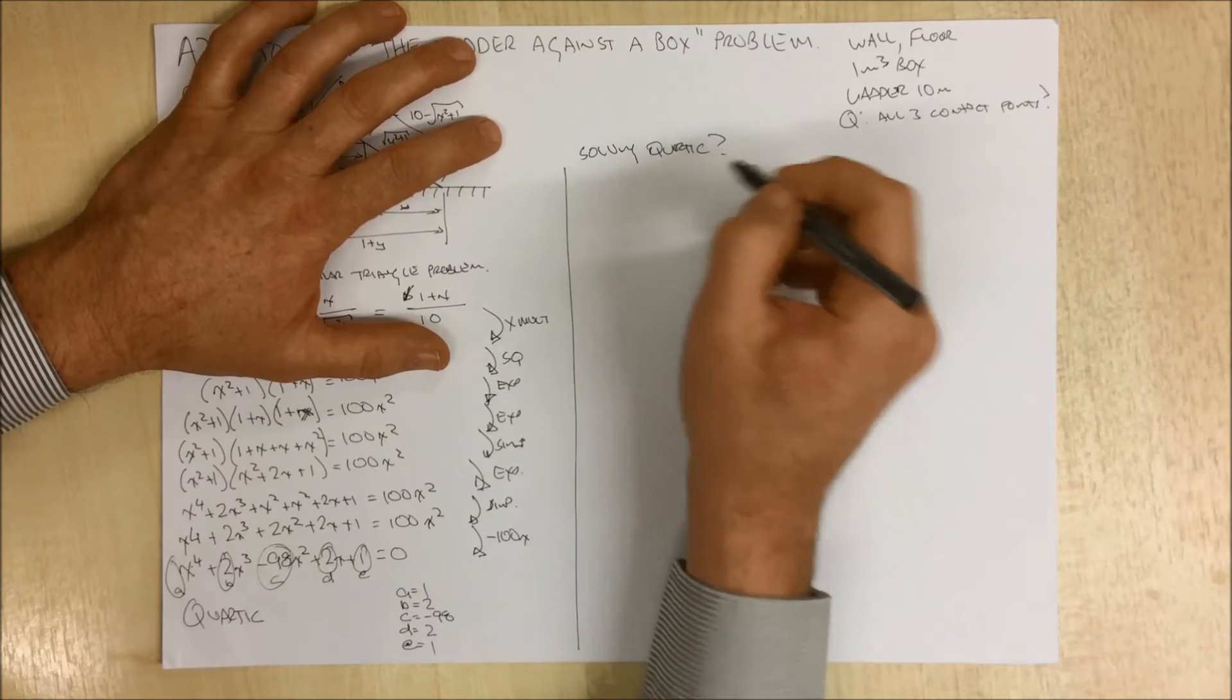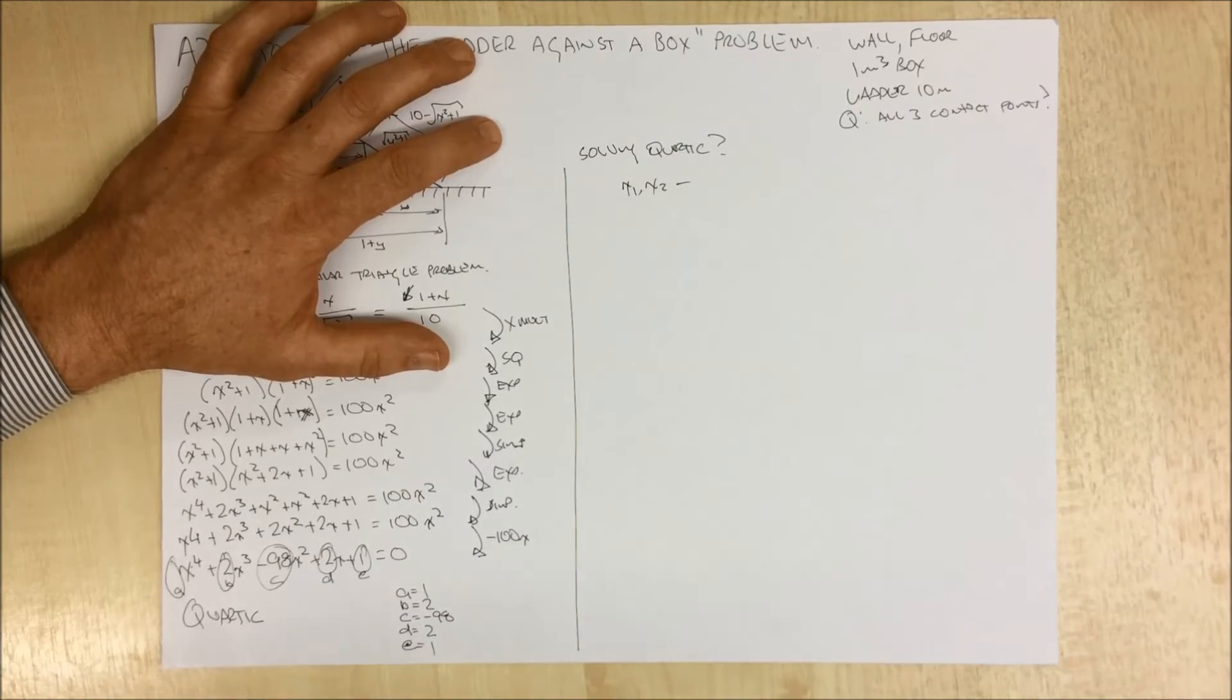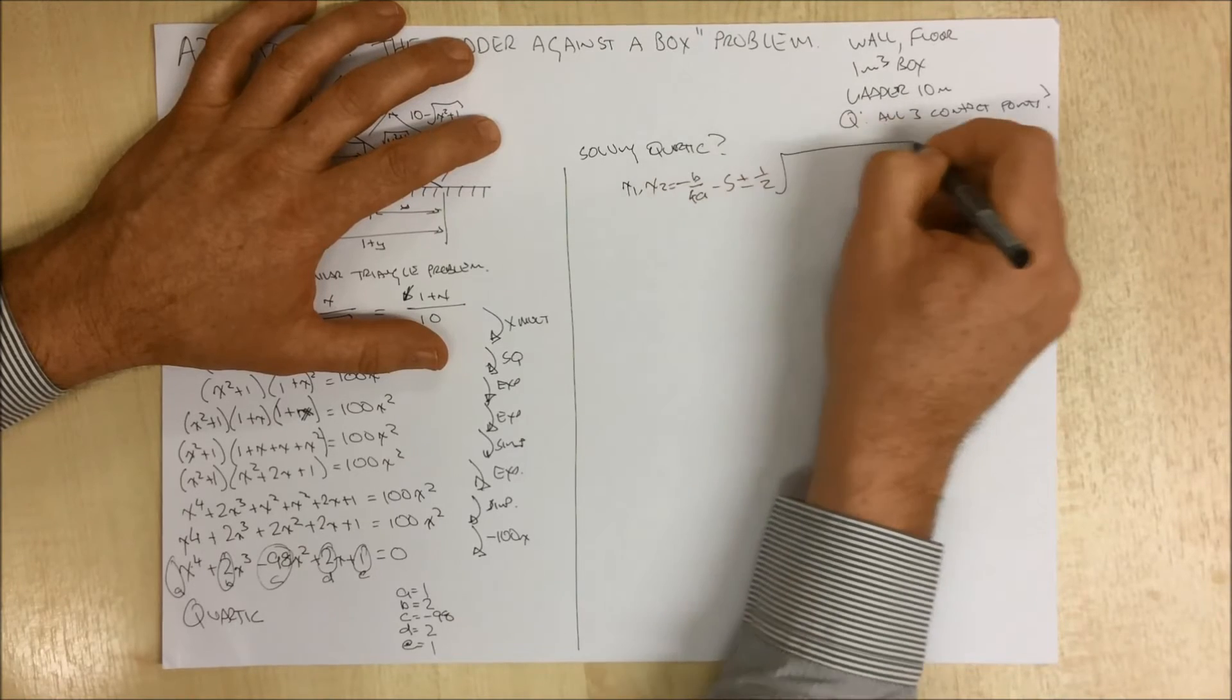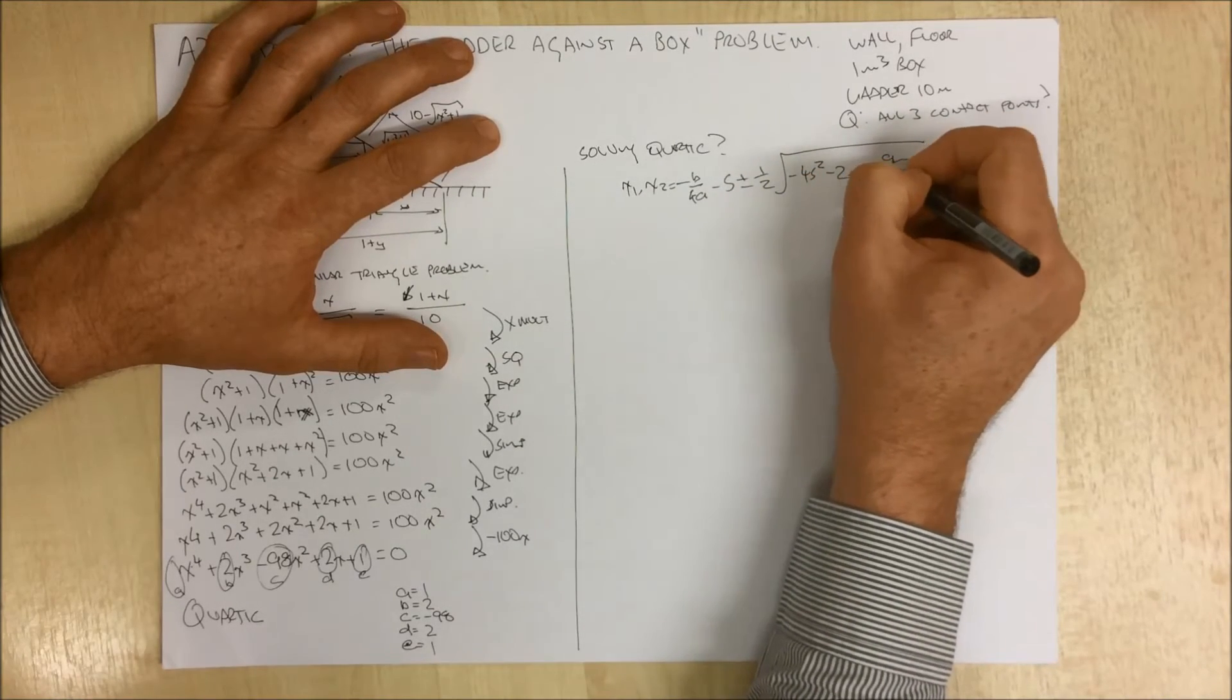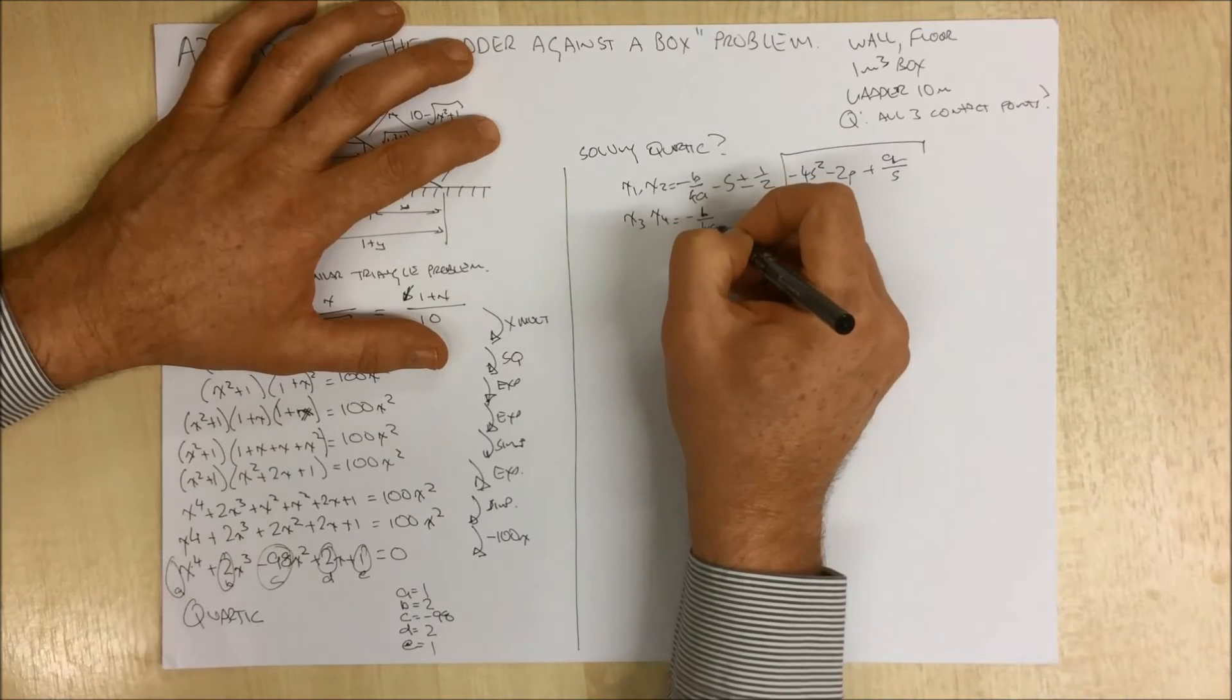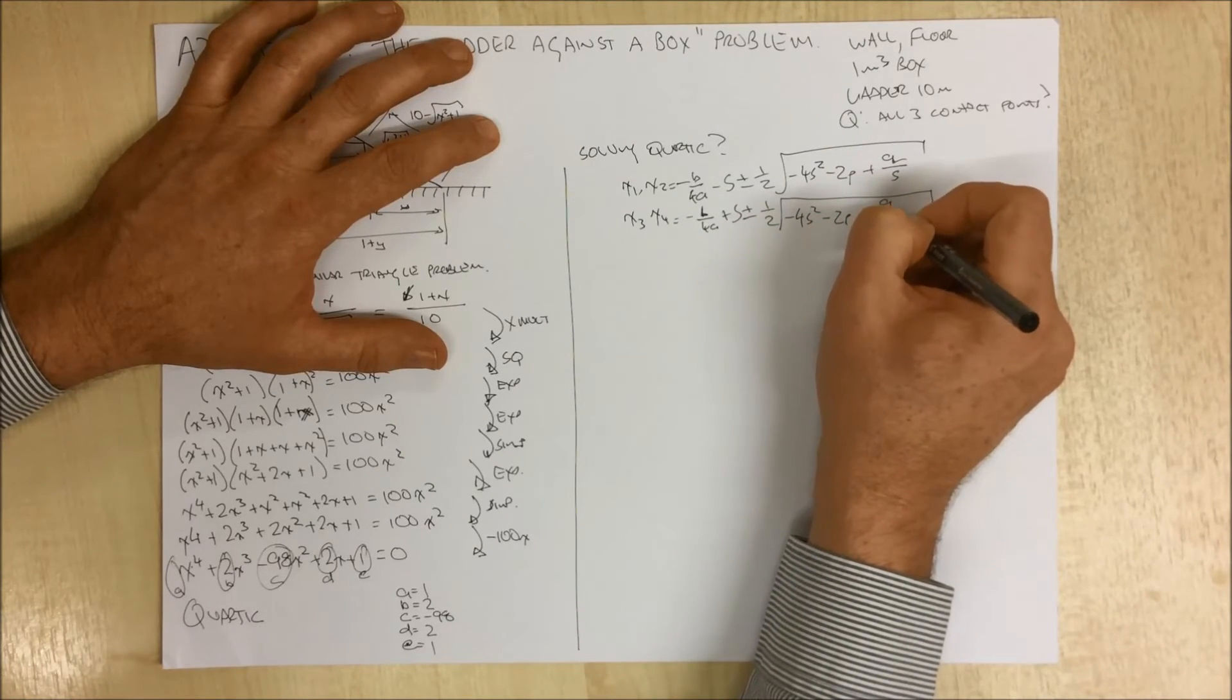So to solve the, the first way says the roots x1 and x2 is a fairly large expression. And those roots equal negative of b over 4a minus s plus or minus a half times the square root of minus 4s squared minus 2p plus q over s. And the next couple of roots x3 and x4, very similar expression, minus b over 4a plus s plus or minus a half times the square root of minus 4s squared minus 2p minus q over s.